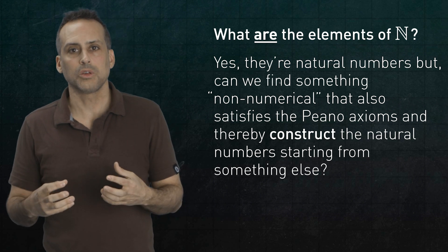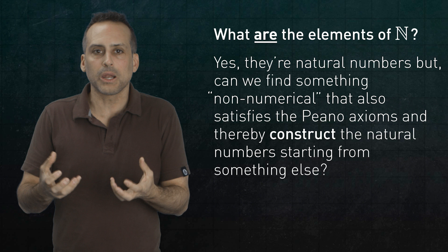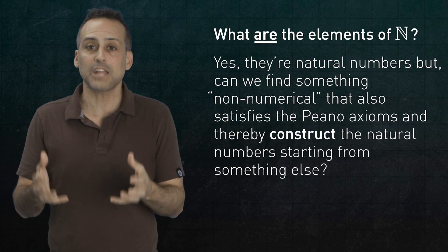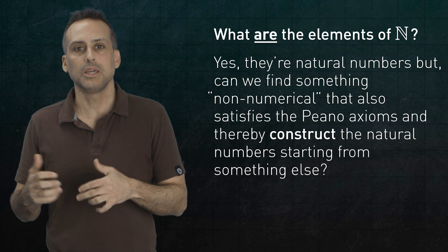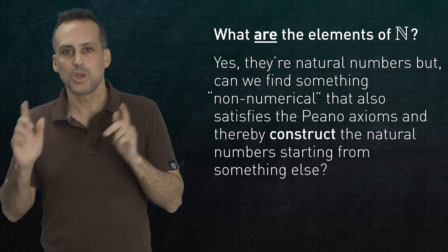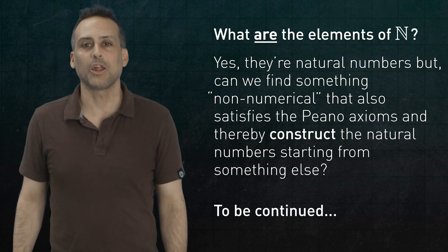But we're leaving open the question, what are those things? Are they irreducible fundamental ingredients in the mathematical pyramid? Or can even these entities, the natural numbers, be built out of simpler entities in the same way that the integers get built from the naturals? We'll answer that next time, and I'll see you then.